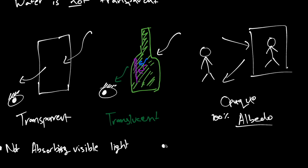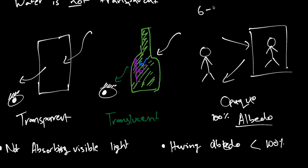So the other factor for being transparent is having an albedo less than 100%. In the case of water, it does reflect light — as we can see the horizon or the sunrise on the surface of the ocean — but its albedo is about 6% to 13%, depending on your latitude. So that's not the real reason why water is not transparent. The real reason comes down to its absorptivity.